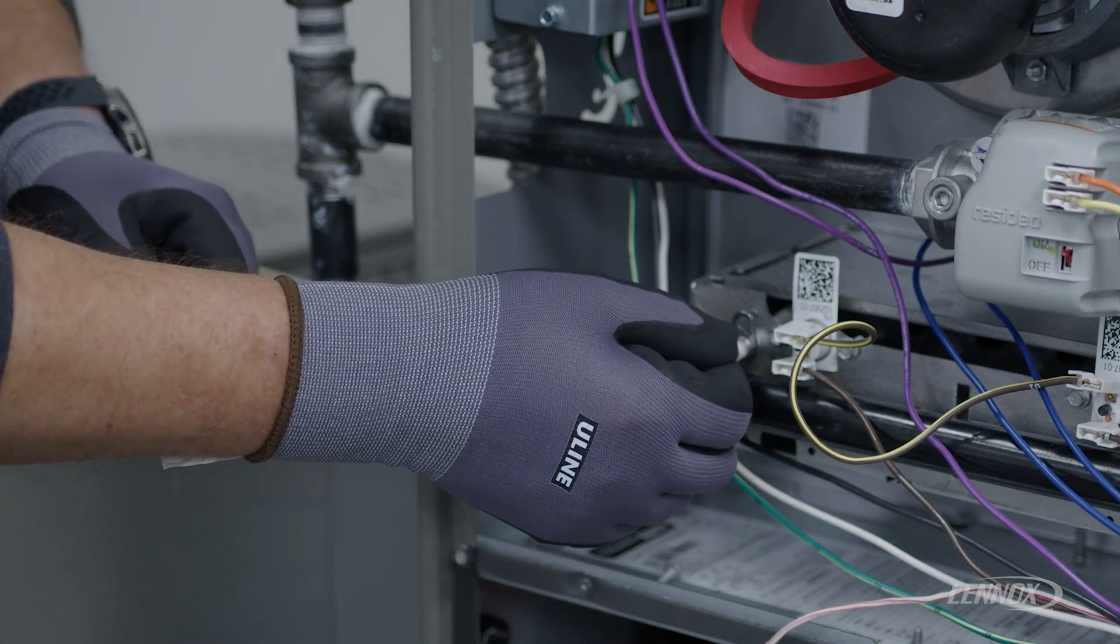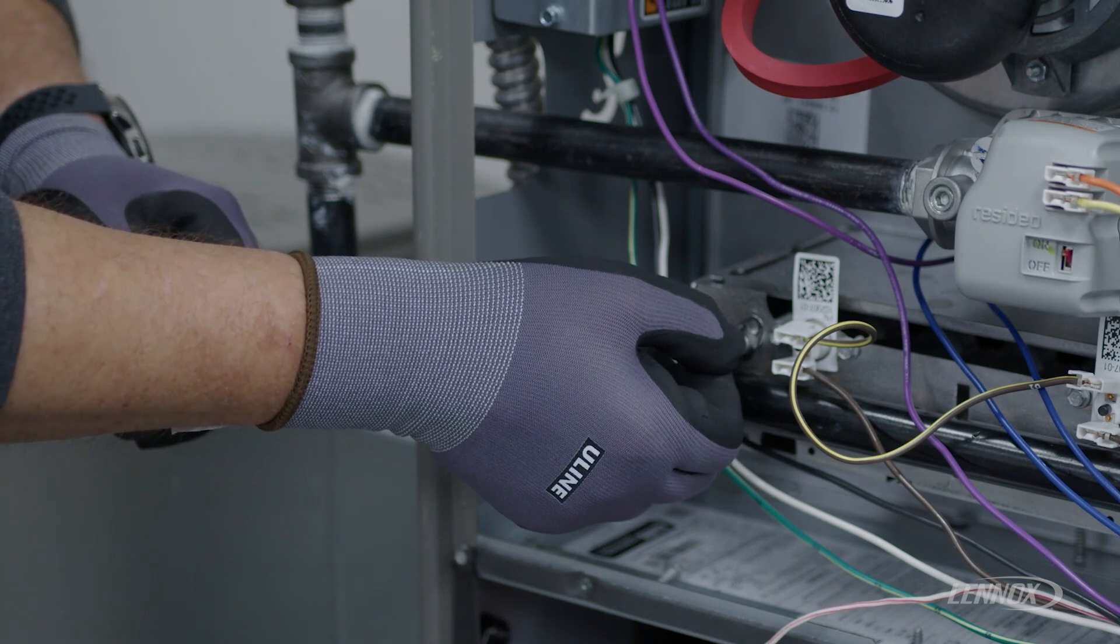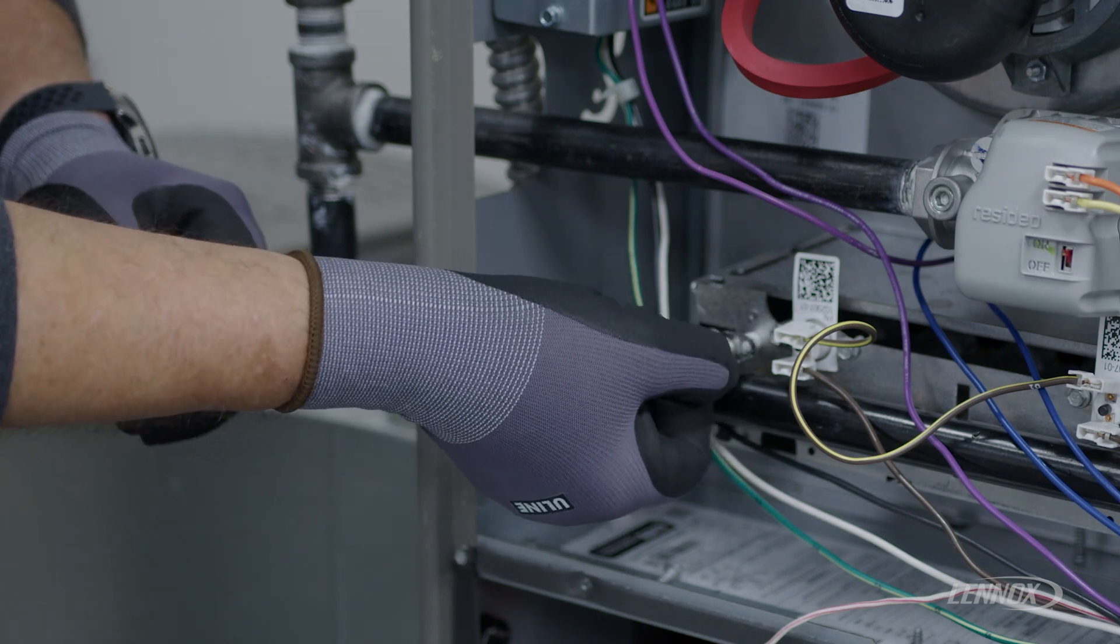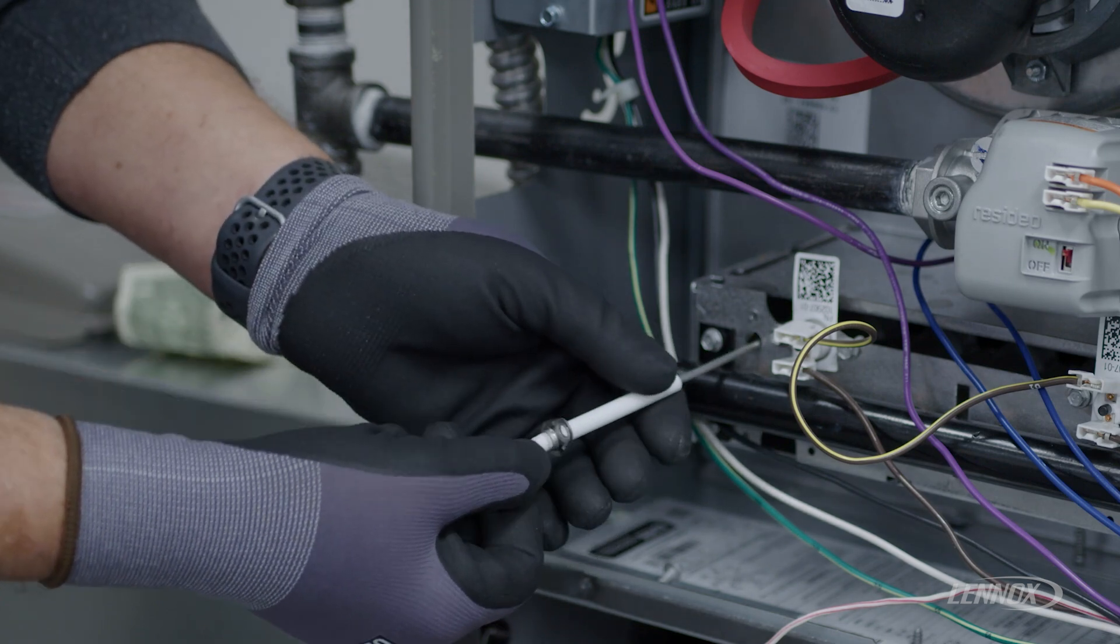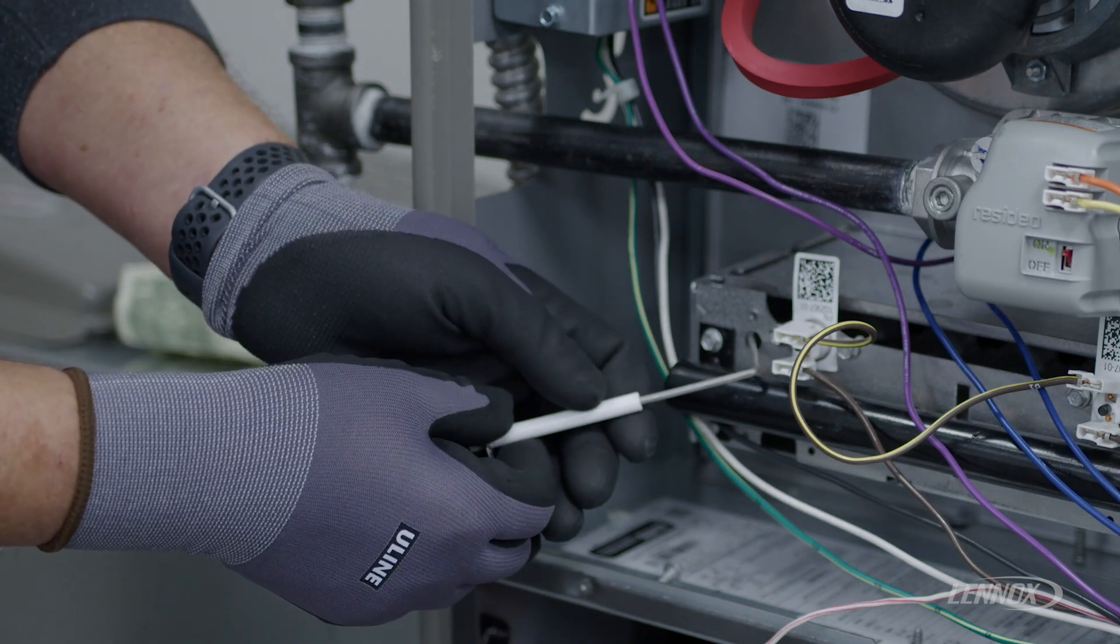Be careful on this model. The flame sensor rod has a 90 degree bend, so you will have to twist the flame sensor, pull it out, following the path of the bend.